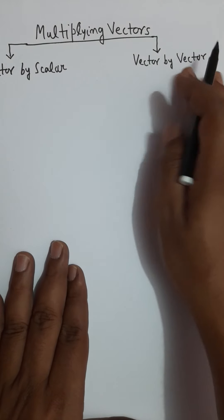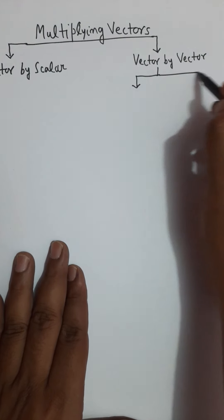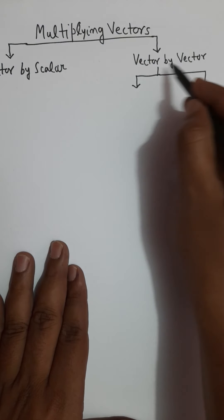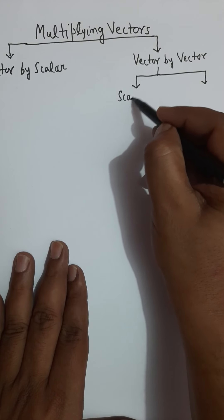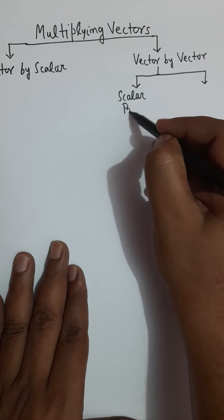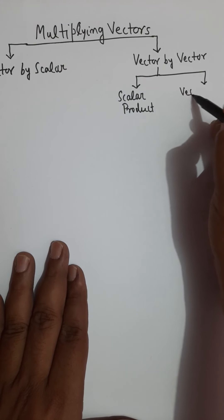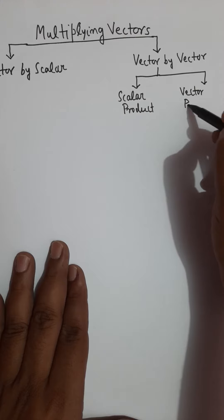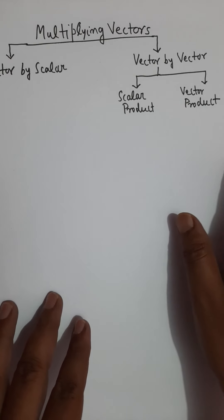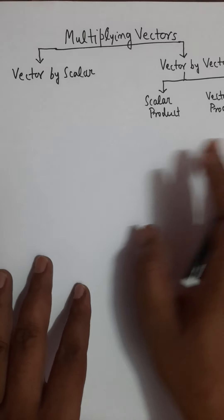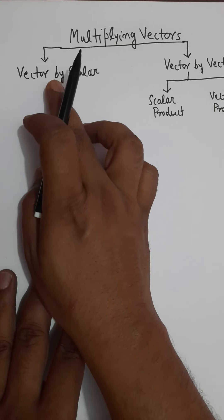Multiplying vector by vector has two further subcategories. One is known as scalar product and the second is known as vector product. First we will learn about multiplying a vector quantity by a scalar.